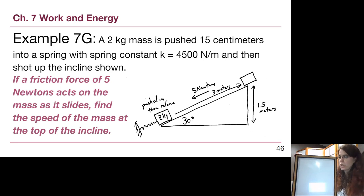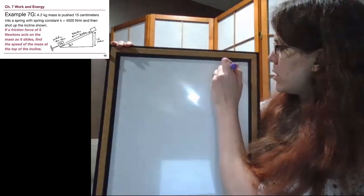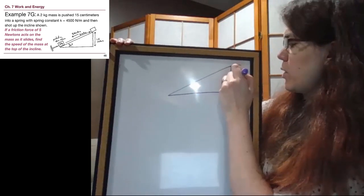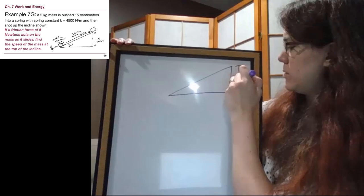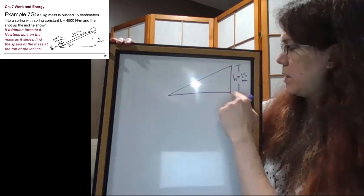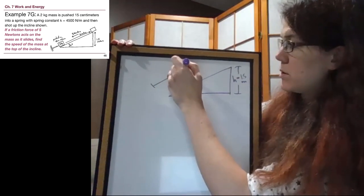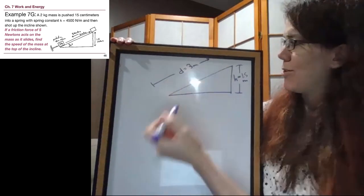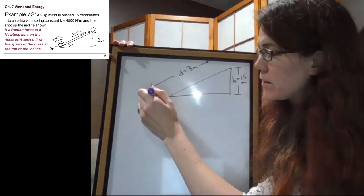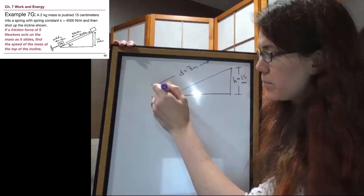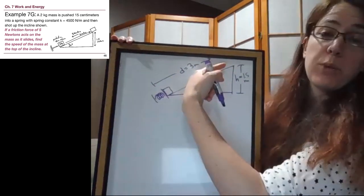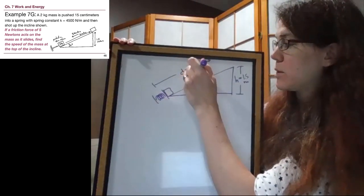Okay, so just like with all of our other problems we can draw a picture. So the height here we're told is 1.5 meters, the distance along the ramp is 3 meters, we'll pretend that keeps going, and at the beginning of the situation we are already pushed into a spring and that's going to go sliding up the ramp.